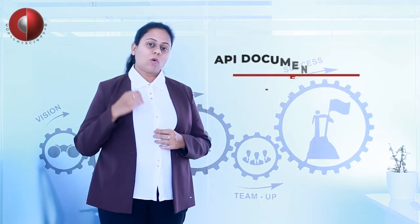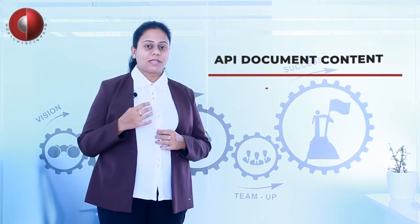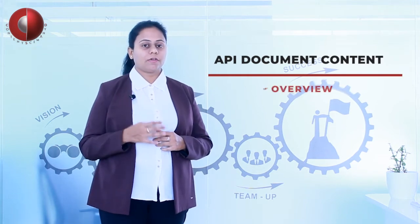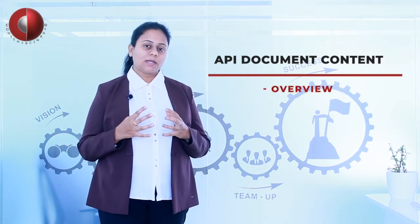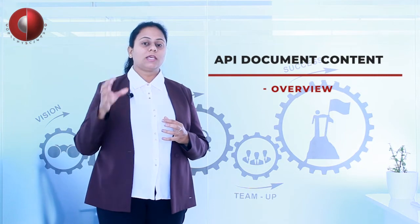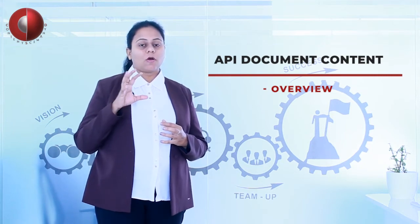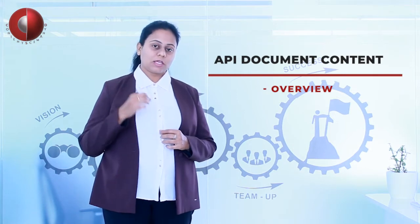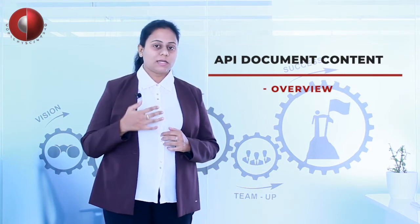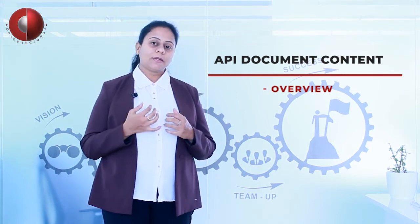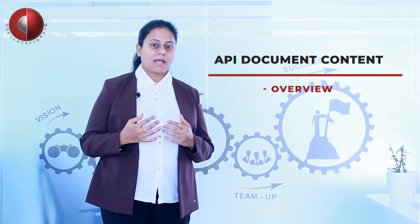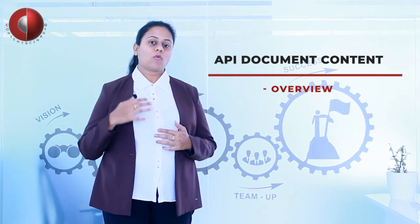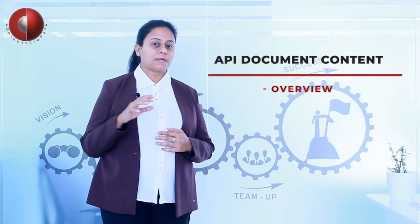So let's see what the API documentation should include. The first one is an overview. The API documentation should provide an overview of the concept — a summary of the API, what problem it is solving, why to consider this API over other APIs, and what are the benefits of using this particular API.